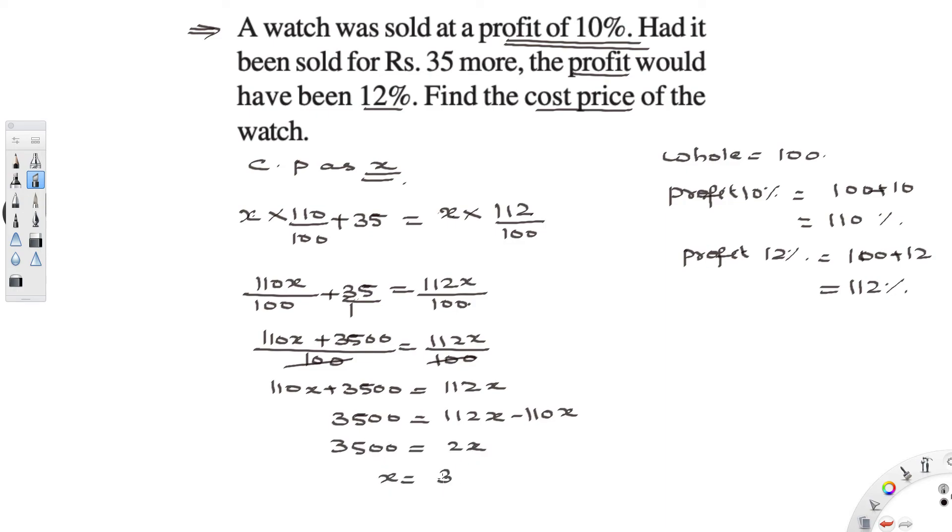So x is equal to 3500 divided by 2 which is nothing but 1750 rupees.